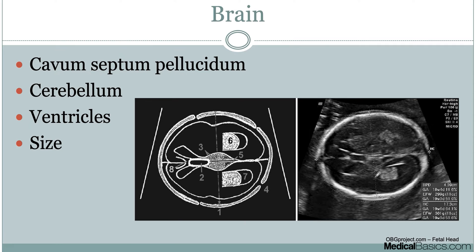The goal is to determine if there's something majorly wrong with any of the major brain structures. They'll look at it in various projections, because certain findings — for example, with the cerebellum, whether it's large or small — are better seen on specific views such as a sagittal image.